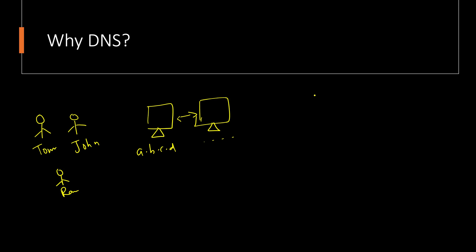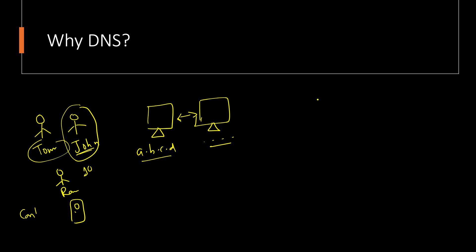You can take the analogy of contact numbers — you don't remember people's contact numbers, you remember people by their names. So you save their contact numbers by name. Whenever you want to know the contact number of John, you look into your contact list and find his number. Similarly, computers need an IP address to communicate, so we map websites to their IP addresses.